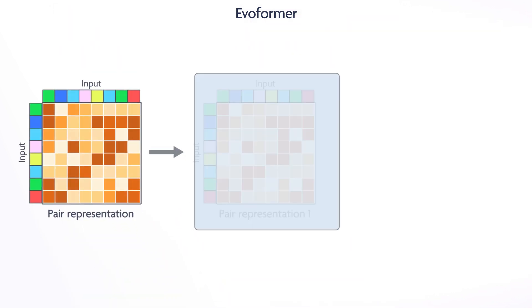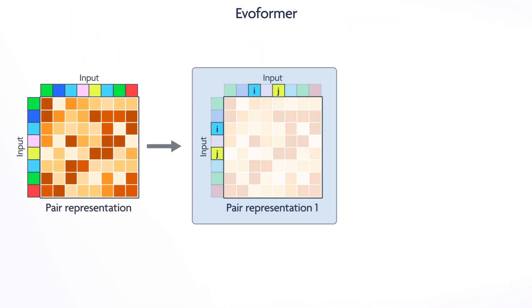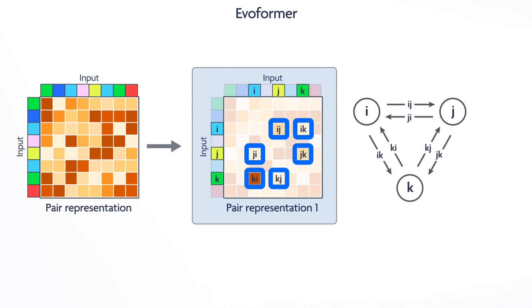The pair representation tower evaluates the relationships between every two residues, which can be thought of as nodes, to refine the proximities or edges between the two. It achieves this by triangulating the relationship of each node in a pair relative to a third node. The goal of this process is to help the network satisfy the triangle inequality theorem, where the sum of two edges on a triangle must be equal to or greater than the third.